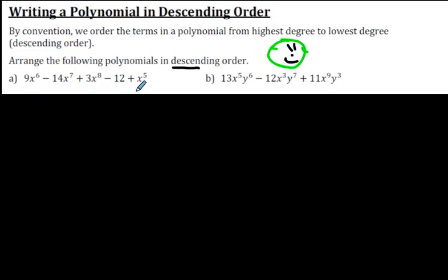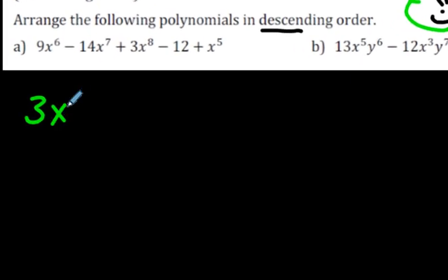Now, let's put these in descending order. Descending order means you start with the highest degree and move your way down. So, if you're dealing with just a lot of x's here, as we are, we're going to start with the highest degree, which is 3x to the 8. We're done with that one.